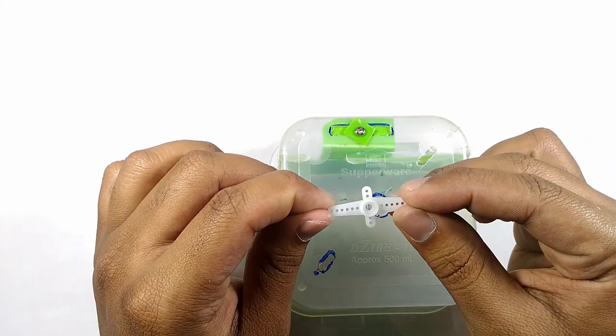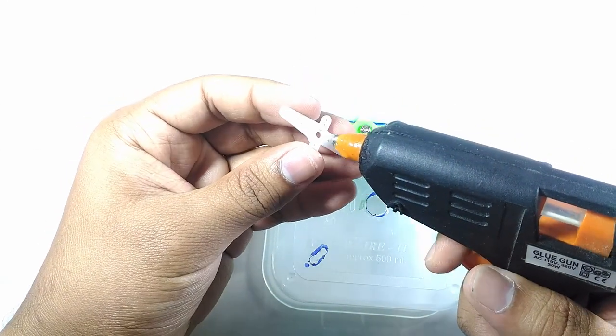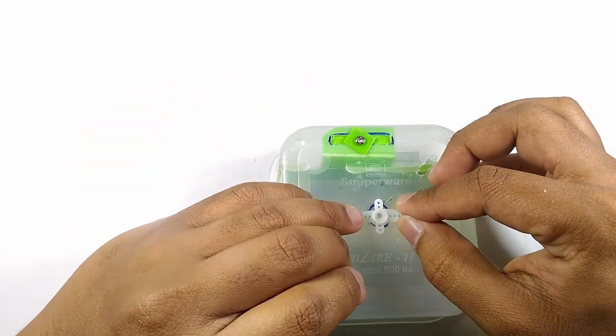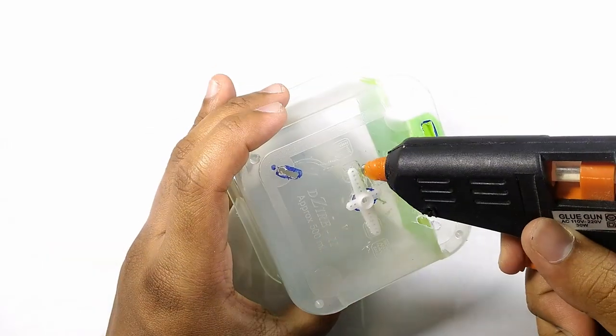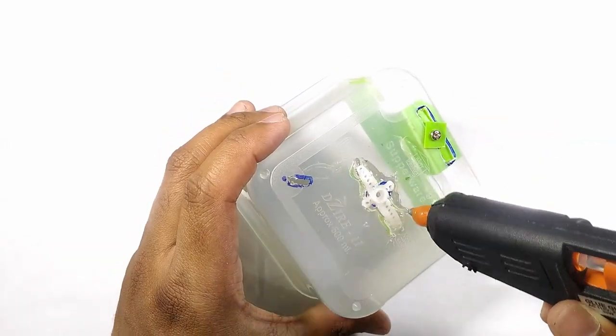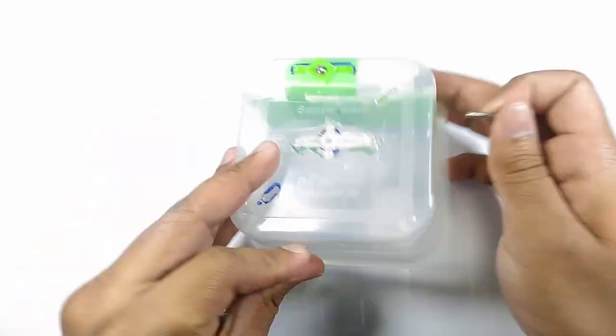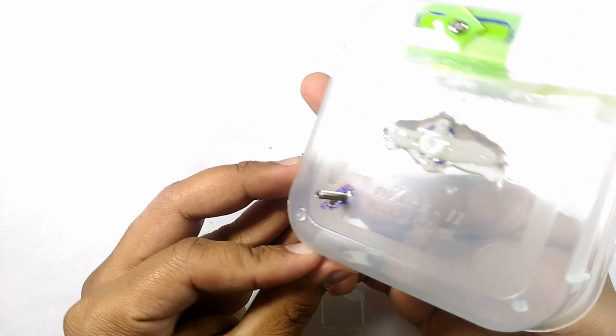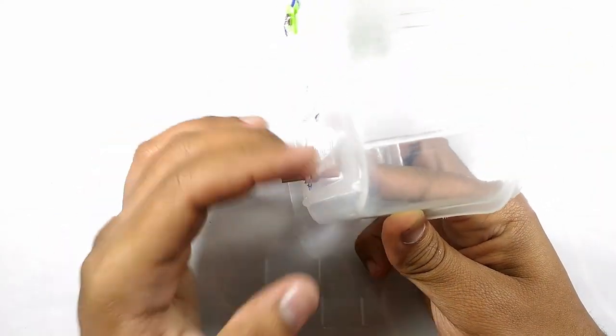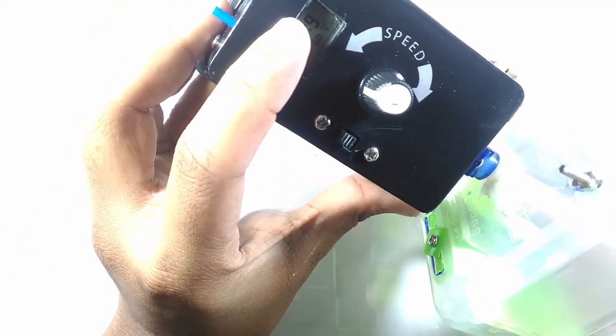Afterwards, I stuck the arm of the servo to the middle opening of the container with hot glue. I added a nut and bolt to the opening on the edge. This will be used to trigger the micro switch. I thereafter secured the container to the servo.